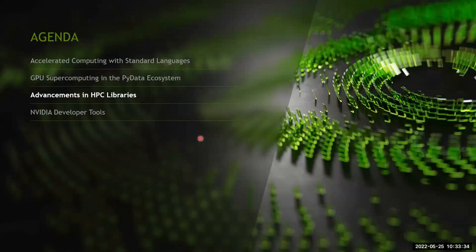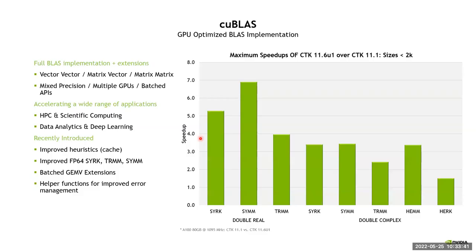So that's it in terms of programming models. I do want to highlight some of our math libraries because they're really a key part for HPC developers. The first one I'll highlight is cuBLAS. This is probably our most widely used math library, at least within the HPC space. And it supports the full BLAS level one, two, and three, plus a variety of extensions. And these extensions are things like being able to operate in mixed precision, operate across multiple GPUs, and perform batched operations. So if you have very small matrix multiplies, you can batch them together and launch them all at once.